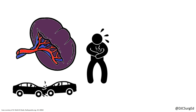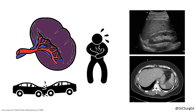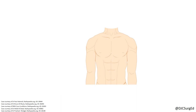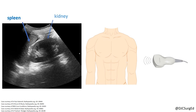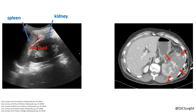As a consequence, imaging has become an important element of diagnosis and management. The FAST examination is used frequently as an initial means of diagnosing hemoperitoneum in blunt trauma patients. The left upper quadrant or perisplenic view evaluates the splenorenal interface for the presence of free fluid. A negative FAST does not rule out splenic injury, and CT of the abdomen with IV contrast is the imaging of choice for diagnosis.